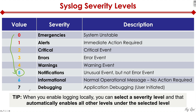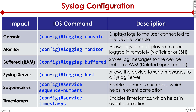Let's look at a couple of different commands and understand their impact. Syslog allows you to generate log messages, and the first place where you can see them is the console. When you are consoled into the device via the console port, you can see the different logs. For that, you type in the command 'logging console' on your router, switch, or firewall.